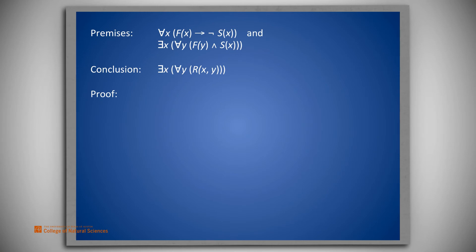Here's the proof. On line 1, we place our second premise. There exists an x such that for all y, f of y and s of x. On line 2, we existentially instantiate line 1 with x being replaced by a star. This results in, for all y, f of y and s of a star.